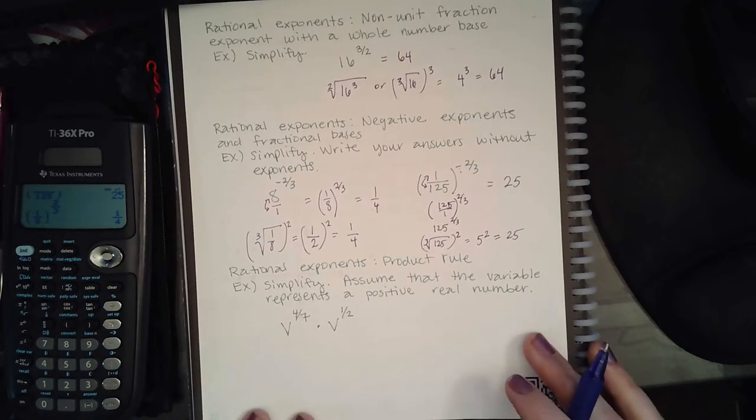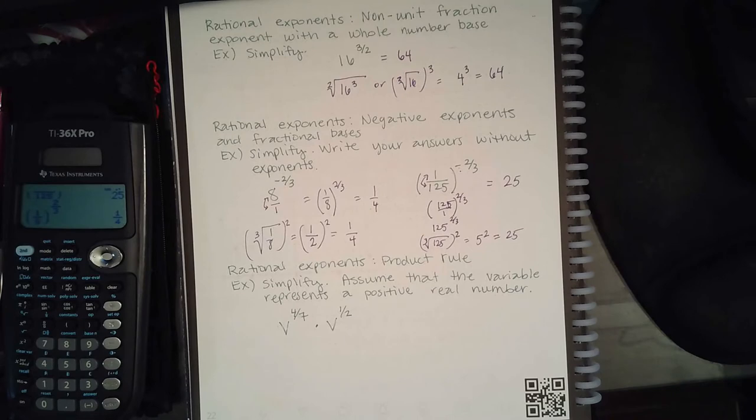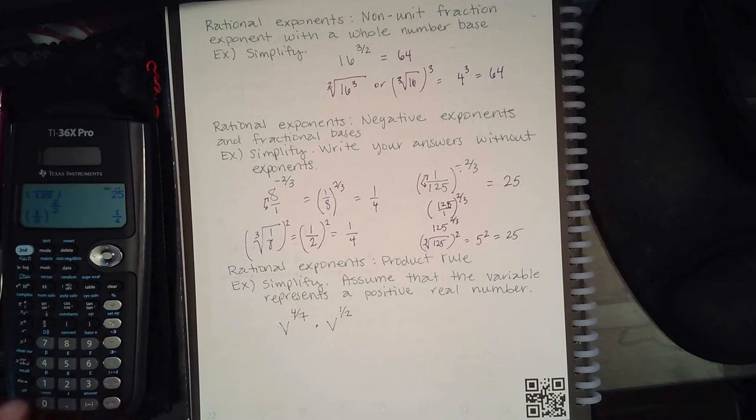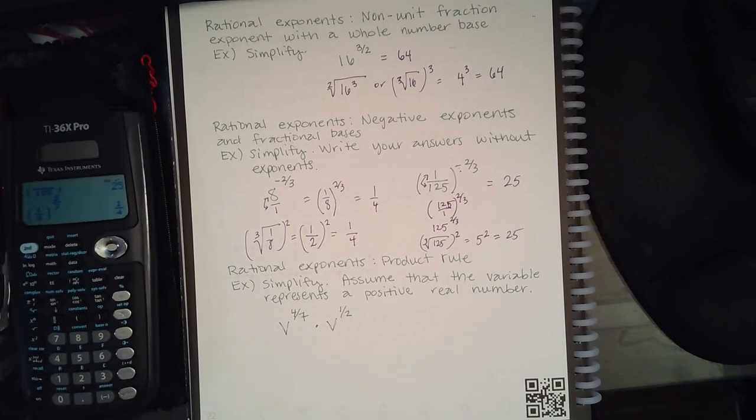Now here it's where those rules are really going to be important because now I don't have numbers as my bases, so I can't just type them in my calculator. I'm going to have to do this by hand. So it says the product rule, simplify. Use the variable that represents... It says assume the variable that represents a positive real number.